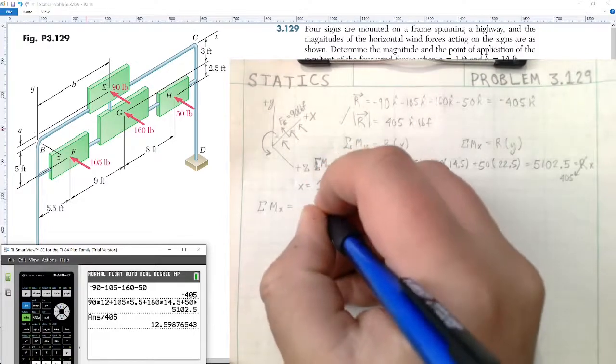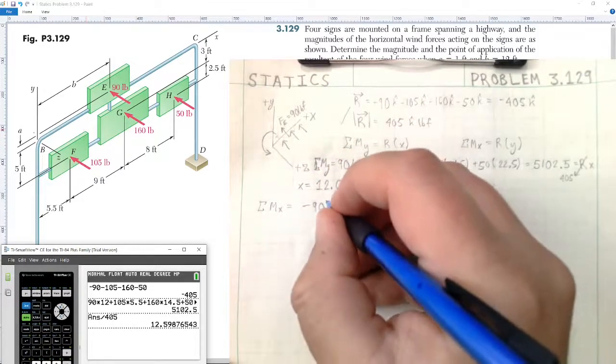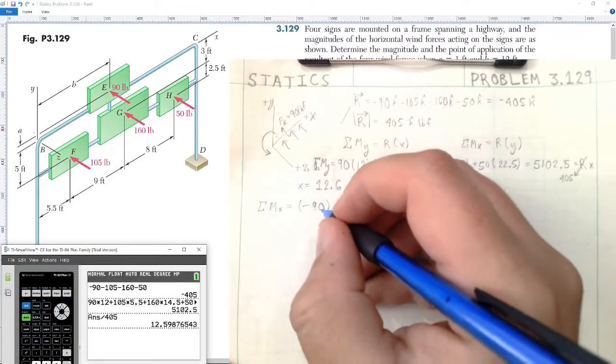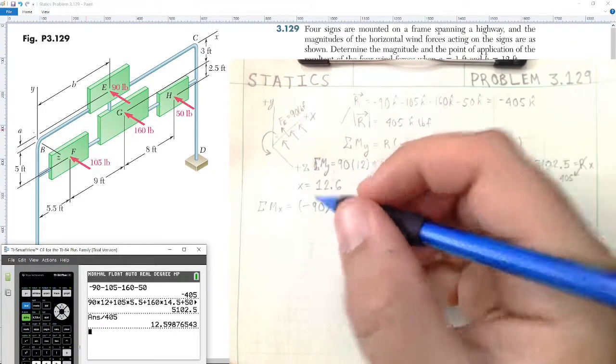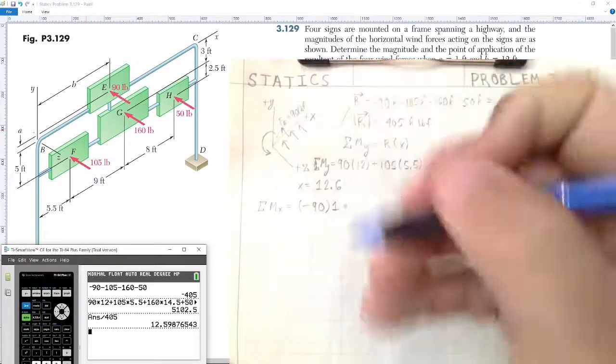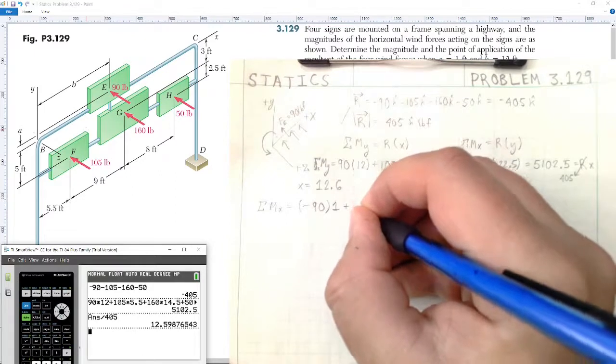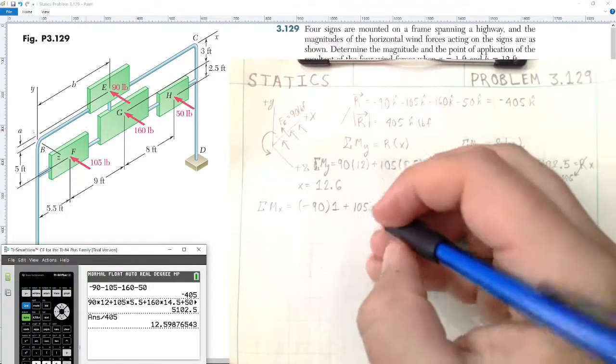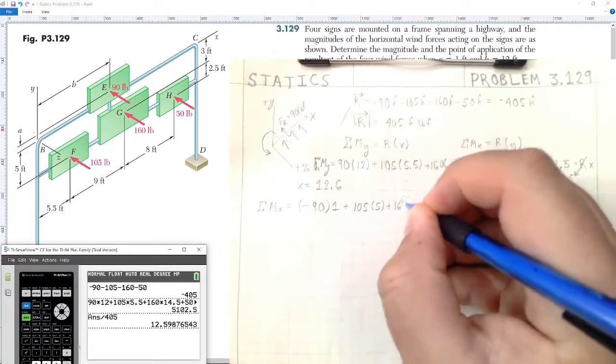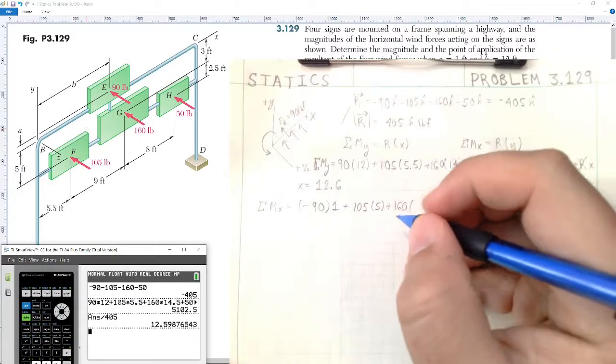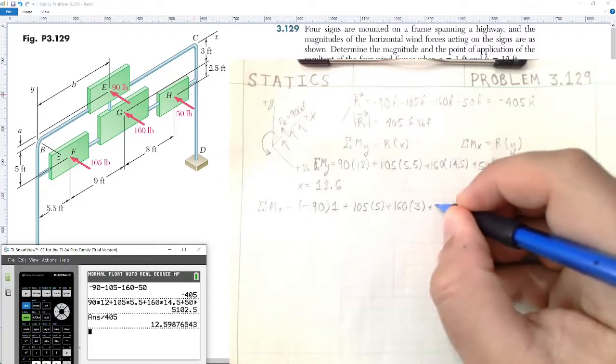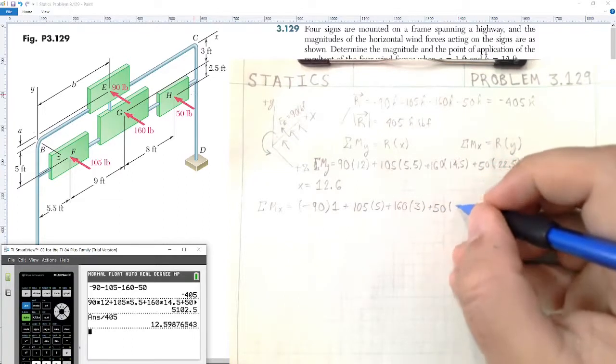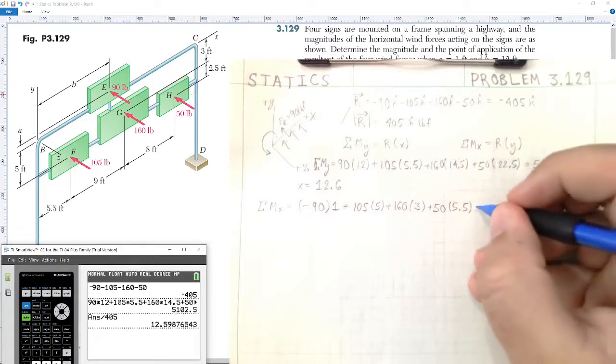So looking at the X direction, we have a force of negative 90 pounds, multiplied by its position from the X axis, which is a distance of A, which would be simply one foot. And then the rest of the moments will all be positive because they are creating counterclockwise moments viewed from the positive X axis. So we have positive 105 multiplied by 5 feet plus 160 multiplied by its position, which looks to be 3 feet. And then finally, H is another 2.5 feet down, so it would be plus the 50-pound force of H multiplied by 5.5 feet.